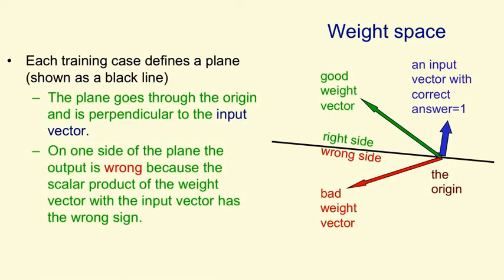So to summarize, on one side of the plane, all the weight vectors will get the right answer, and on the other side of the plane, all the possible weight vectors will get the wrong answer.